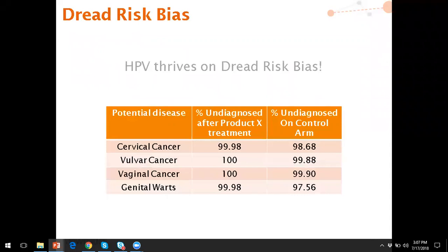An example closer to home in the pharmaceutical space is HPV — it thrives on dread risk bias. Studies have shown that Product X was utilized to try and prevent HPV, and it's very effective: 99.9% of the time you won't be diagnosed or suffer from HPV if you take the product. But even if you don't take the product, the odds of getting cancer are typically under 1% depending on the type, and genital warts — the most likely outcome — would only be about 2%. But the worry about getting cancer due to HPV drives people to get the treatment.